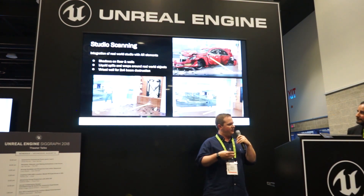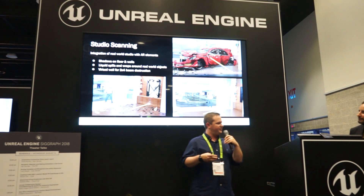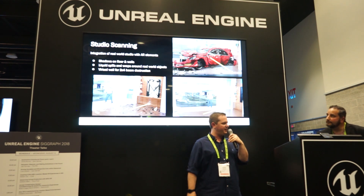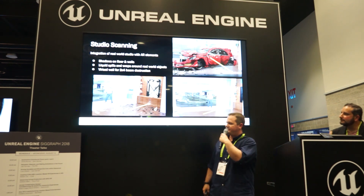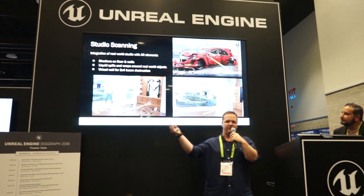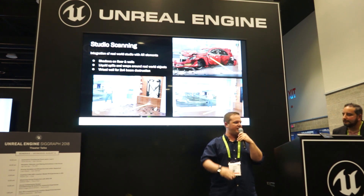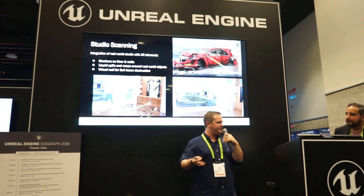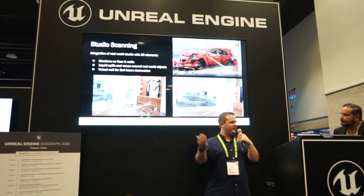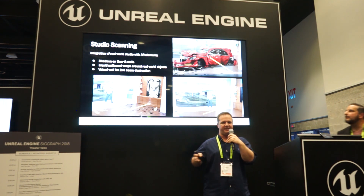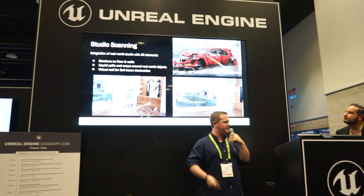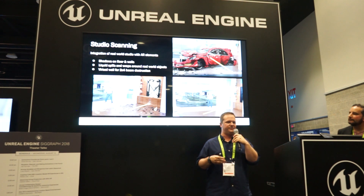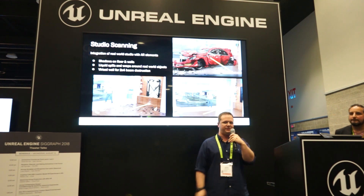We're also able to do some subtle effects that integrate the AR items better inside the studio — for example, shadow catchers on the floors and the walls. As the telephone pole is falling into the studio, we're able to cast shadows on all surfaces of the wall and floor in real time. As the car crashes in, we're able to have the gasoline wrap around the real-world walls inside the studio. In some cases we actually replaced the real wall with a completely virtual wall for the 2x4 destruction.